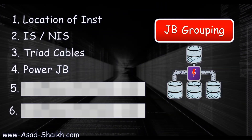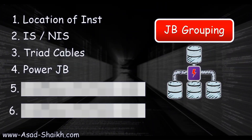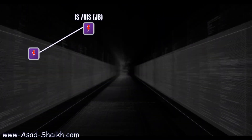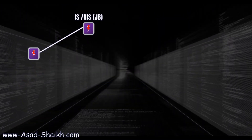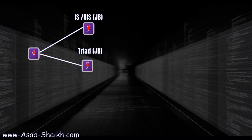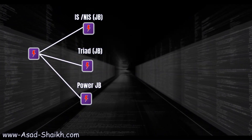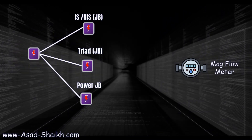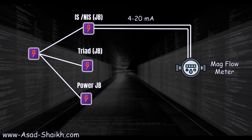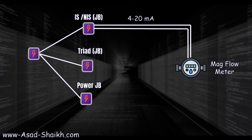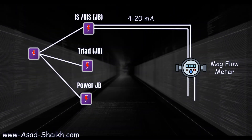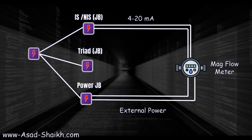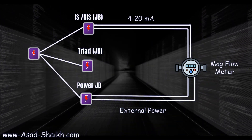The next important criterion is the power JB. Beyond IS, NIS, and triad JBs, a power JB must be kept separately. For example, a magnetic flow meter that is externally powered will have its normal 4–20 mA signal going through the regular JB, but it also needs external power — either 24V DC or AC — which comes from a separate power JB.